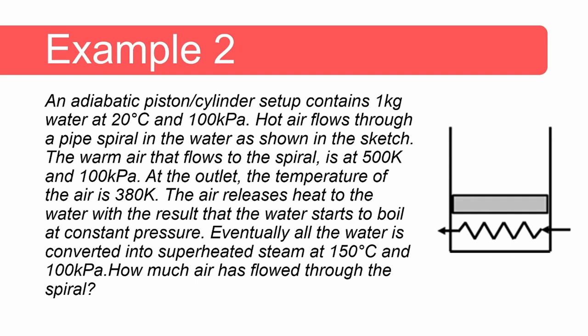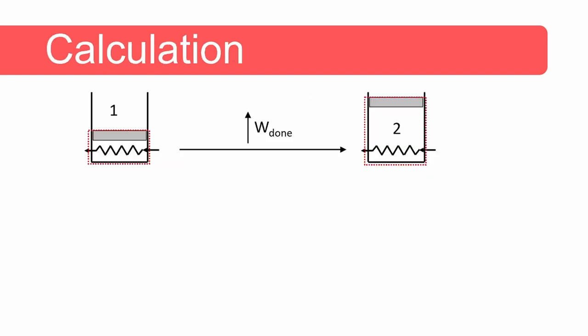Now let's consider example two. An adiabatic piston-cylinder setup contains one kilogram of water at 20 degrees Celsius and 100 kilopascals. Hot air flows through a pipe spiral in the water. The incoming air is at 500 kelvin and 100 kilopascals; at the outlet, the air temperature is 380 kelvin. The air releases heat to the water, which boils at constant pressure until all water is converted to superheated steam at 150 degrees Celsius and 100 kilopascals. How much air has flowed through the spiral?